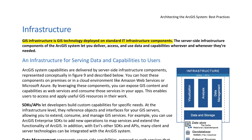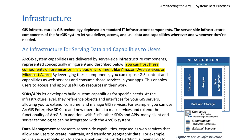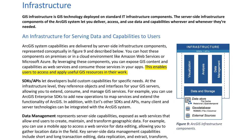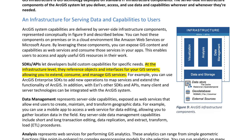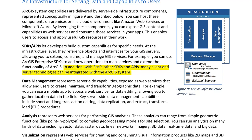Infrastructure. GIS infrastructure is GIS technology deployed on standard IT infrastructure components. The server-side infrastructure components of the ArcGIS system let you deliver, access, and use data and capabilities wherever and whenever they're needed. ArcGIS system capabilities are delivered by server-side infrastructure components, represented conceptually in Figure 9. You can host these components on-premises or in a cloud environment like Amazon Web Services or Microsoft Azure. By leveraging these components, you can expose GIS content and capabilities as web services and consume those services in your apps. SDKs and APIs let developers build custom capabilities — at the infrastructure level they reference objects and interfaces for your GIS servers, allowing you to extend, consume, and manage GIS services.